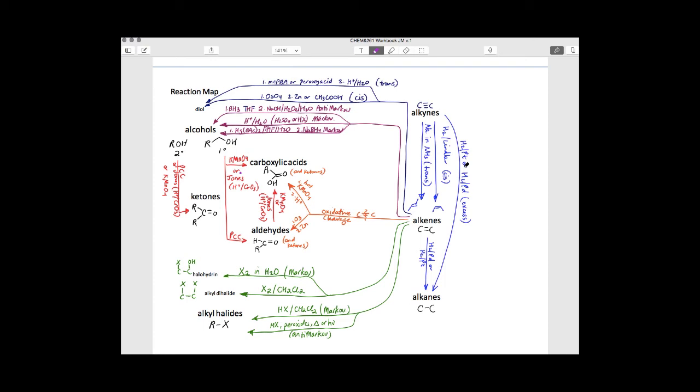Hi everyone. So our last topic is putting it all together. We have all these reactions we were doing from alkenes, adding things onto it to make alcohols, alkyl halides, halohydrins, dihalides, and diols.